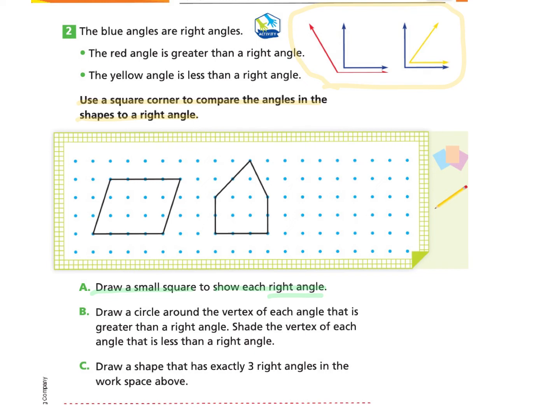When I take a look at the next polygon, I find that there is a right angle here and a right angle here. So those are my two right angles found in these two shapes.